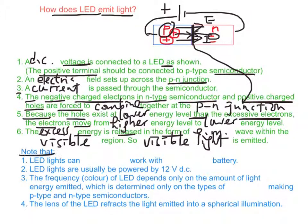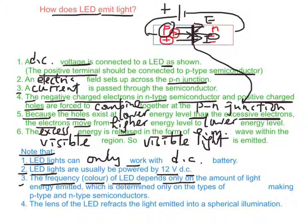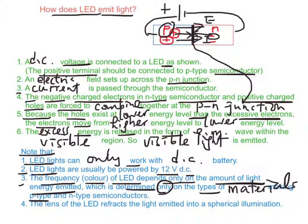Note that LED lights can only work with DC. LED lights are usually powered by a 12-volt DC supply. The frequency or color of LED light depends only on the amount of energy emitted, which is determined by the type of materials making the p-type and n-type semiconductors. The lens of the LED helps to reflect the light emitted into a spherical illumination, spreading the light in different directions.